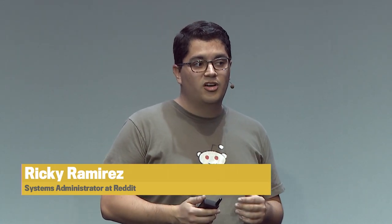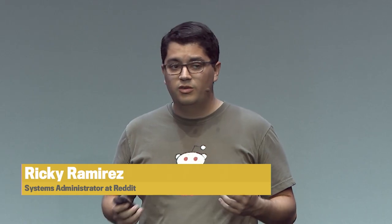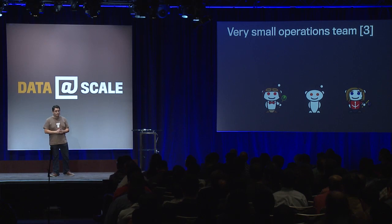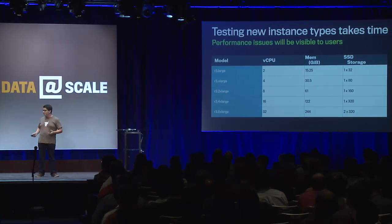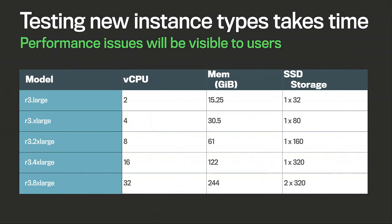Reddit is a small company — we only have three operations engineers, so we don't have time to build a more robust solution; we're always picking and choosing what to work on. On AWS, Amazon constantly introduces new instance types, but we haven't been able to use them because testing takes so long. We have to spin up a new cache server, roll it into the cluster, and often there's a performance issue visible to users, and we have to roll back. It's very stressful.